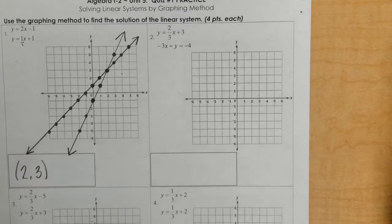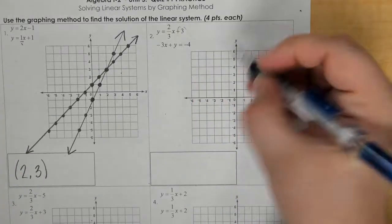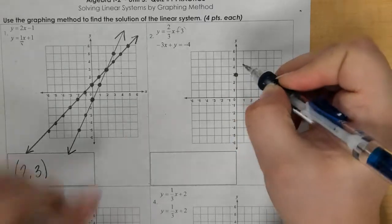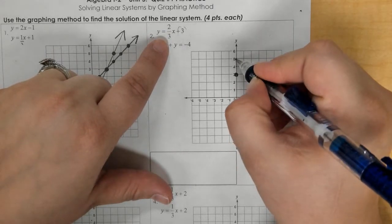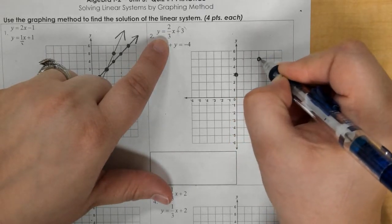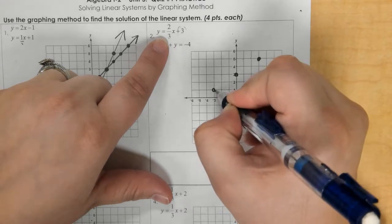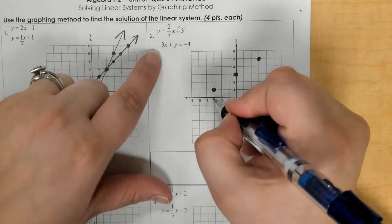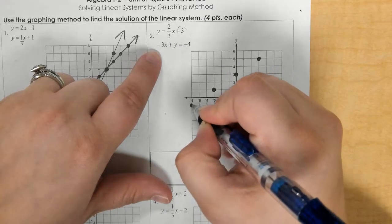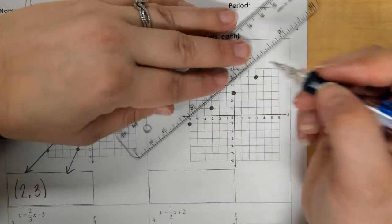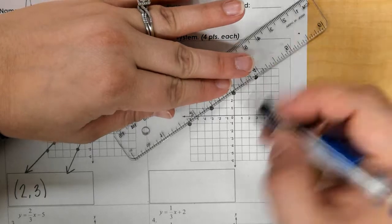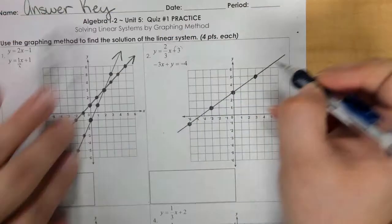In number 2, I graphed this one starting with that positive 3 on the y-axis. We go up 2, right 3. Down 2, left 3. Down 2, left 3. Draw your line.